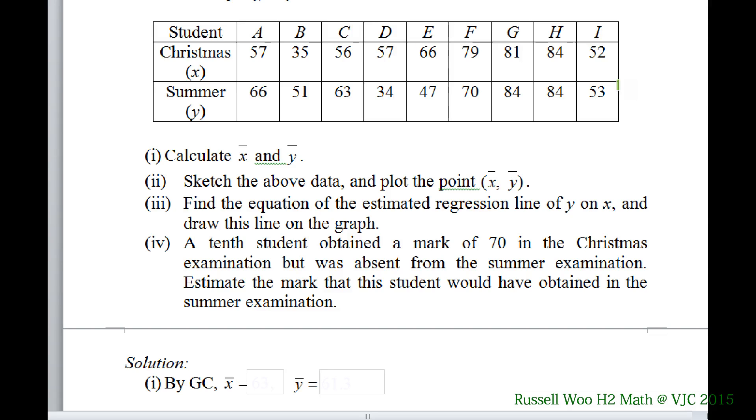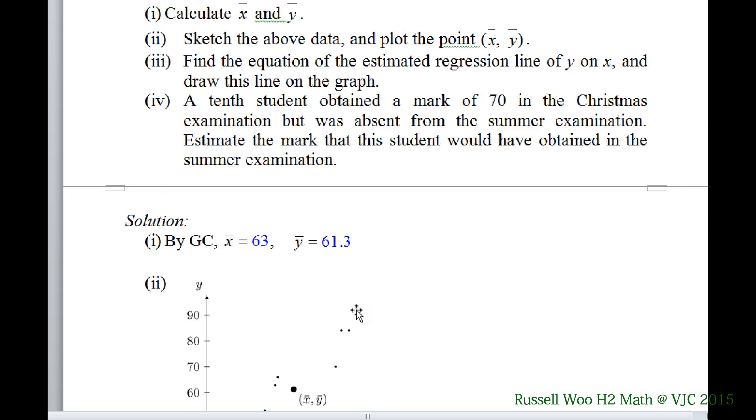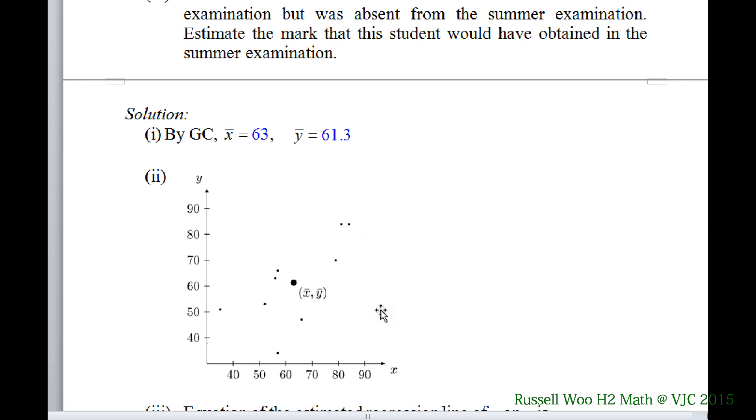So calculate, I'm going to show you. Sketch the above data and plot the point X bar, Y bar. So already given to you. You should be able to keep your GC and use the GC scatter data step plot to draw your scatter data. Now X bar, Y bar is here.